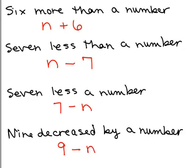By the way, these are all just expressions. They're not equations. We're not solving for anything. We're just writing an expression. Notice there's no verb. Six more than a number. Seven less than a number, et cetera. No verb. It's not going to be an equation. There's going to be no equal sign. We're simply writing an expression from English into mathematical symbols.